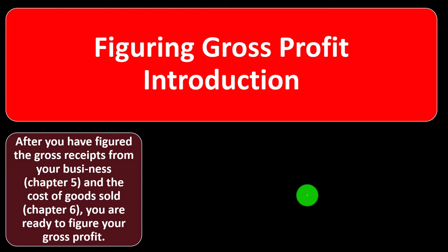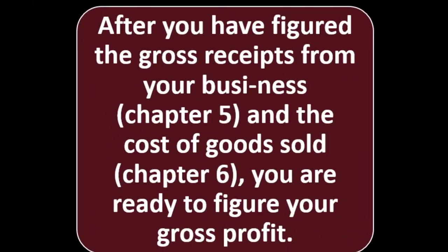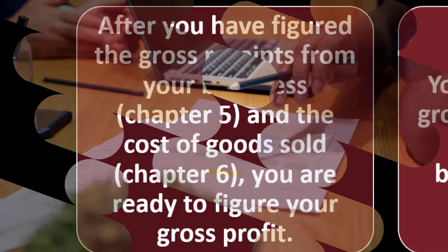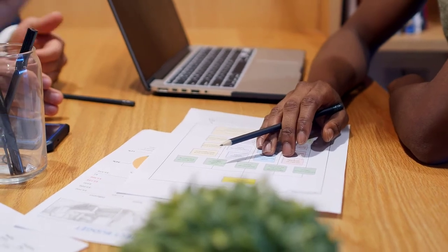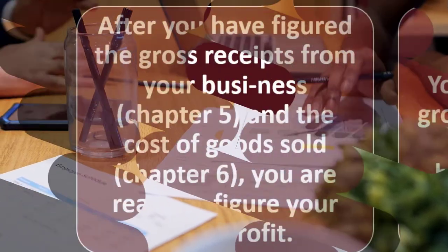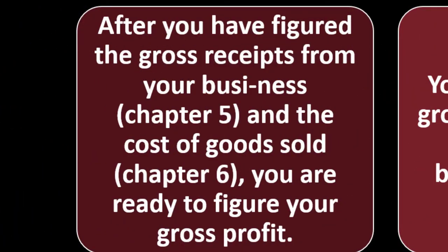We looked at the cost of goods sold calculation in a prior presentation. After you figure the gross receipts from your business, covered in Chapter 5, and the cost of goods sold from the prior presentation, you're ready to figure your gross profit. It's applicable only if you had a company with inventory — either purchasing and marking up inventory, or manufacturing it. If not, figuring Gross Profit is simple — it's essentially the same as the income line.